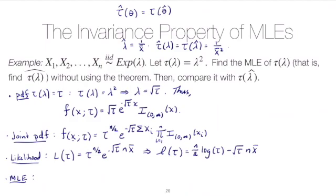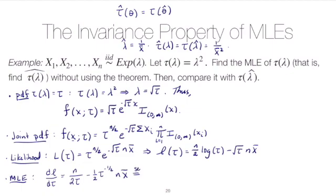Now we're ready to find the MLE by maximizing the log-likelihood. We take the derivative of the log-likelihood with respect to τ and set it equal to zero. The derivative is n/(2τ) for the first term, and then minus (1/2)·τ^(−1/2)·n·x̄ for the second term. We set this equal to zero and solve for τ.